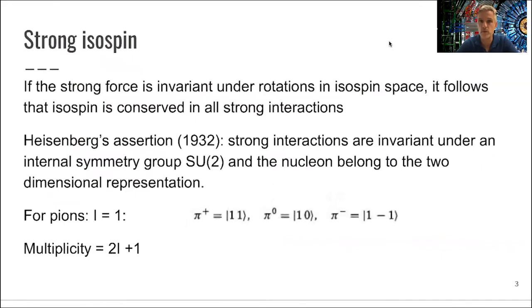But now, if you assume that the strong force is invariant under rotations in this isospin space, meaning when you flip the neutron into a proton and vice versa, those rotations are invariant. The strong force is invariant under those rotations. That means, or it follows directly, is that the isospin is conserved in all strong interactions. So that is what really the conclusion is of this introduction of those new labels, is that isospin is conserved under strong interactions.